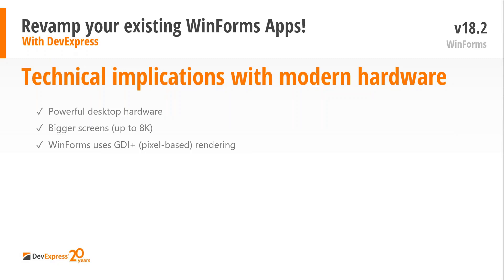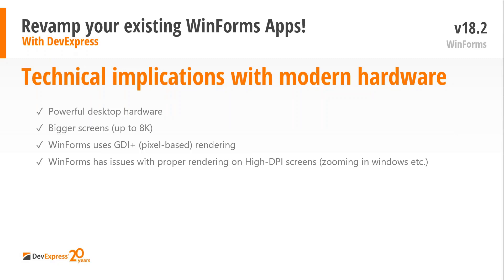Pixel-based rendering doesn't really use your hardware well. Because WinForms is pixel-based, if you have an 8K or even a 4K screen — or in my personal situation, a 13-inch Full HD notebook with the zoom level in Windows turned up to 125 percent — if you do that with a typical WinForms application, you'll encounter some issues with proper rendering of controls on those high DPI screens, specifically when zooming on the OS level.